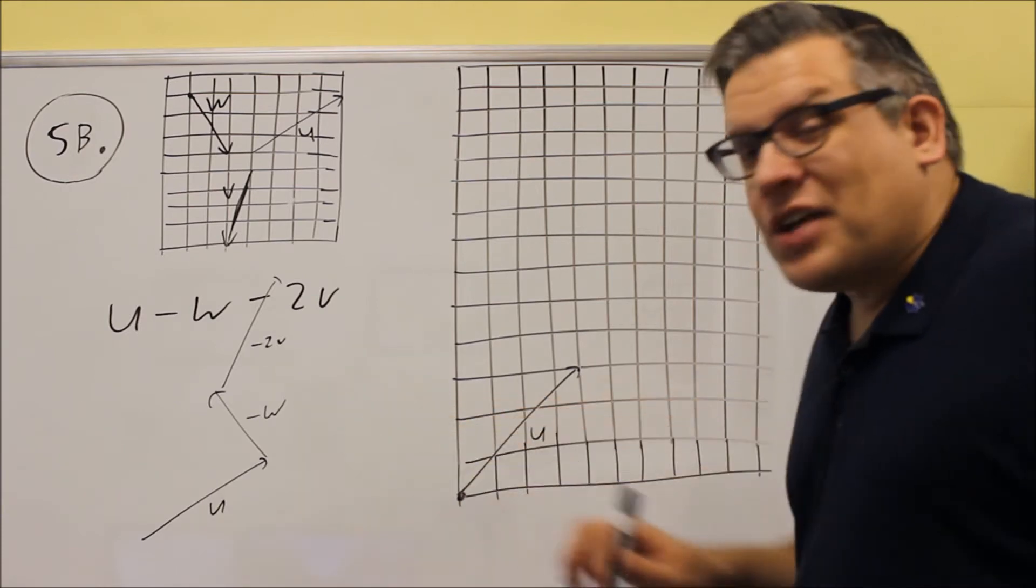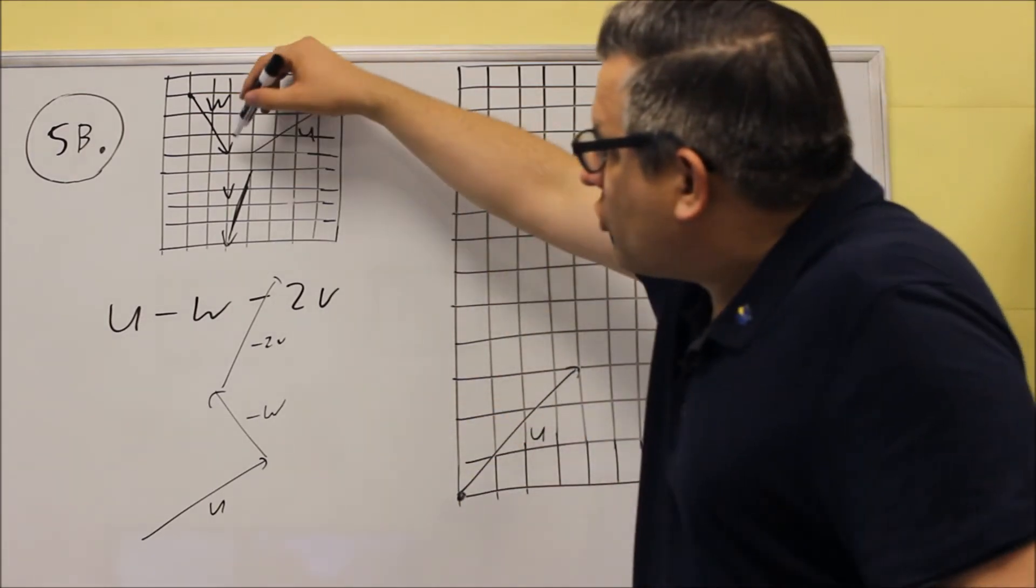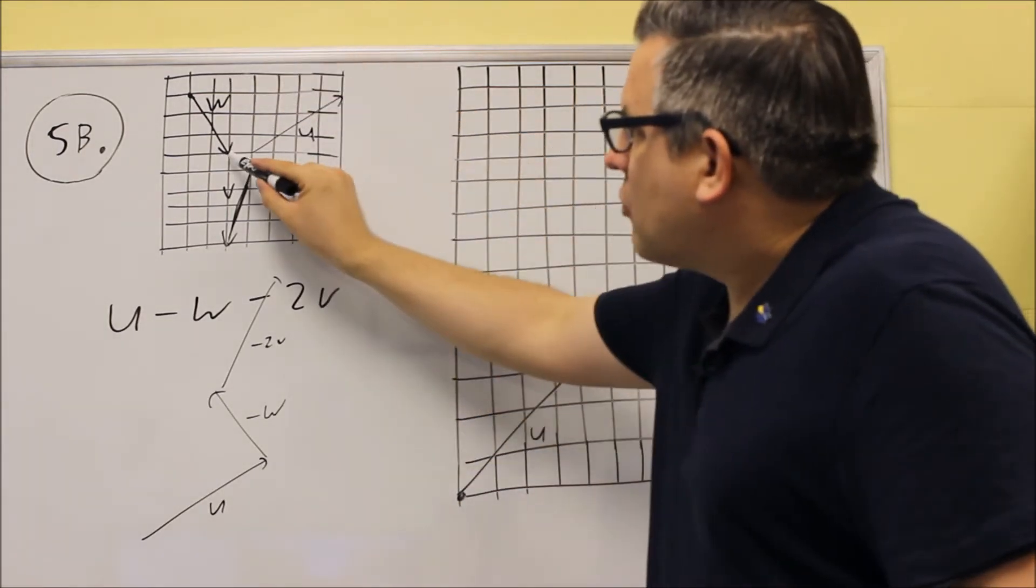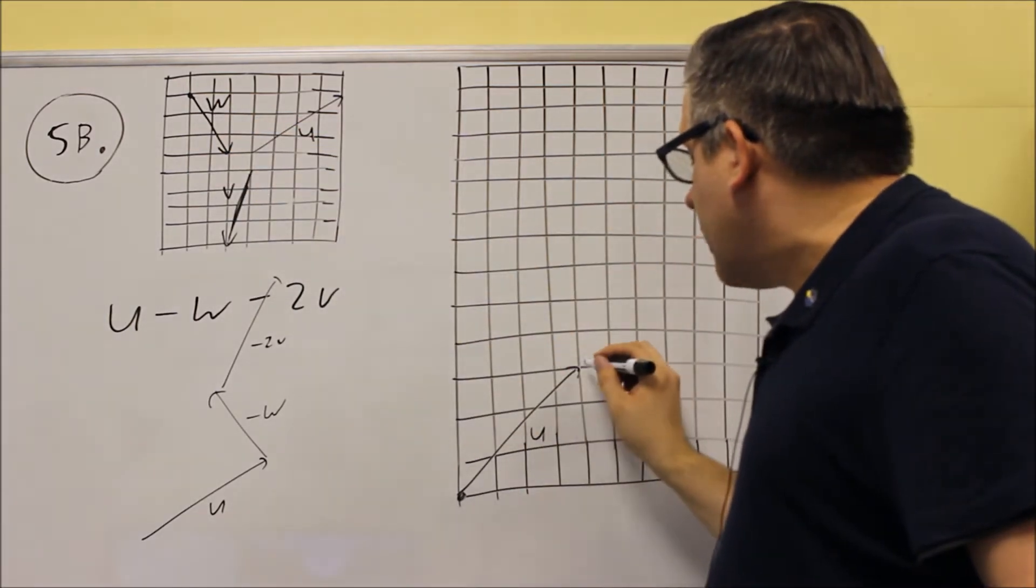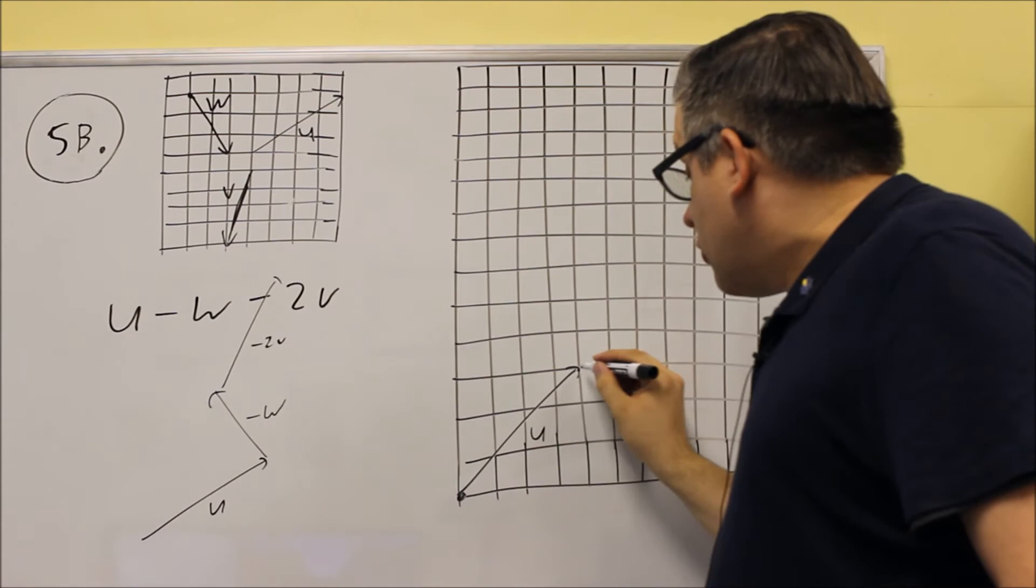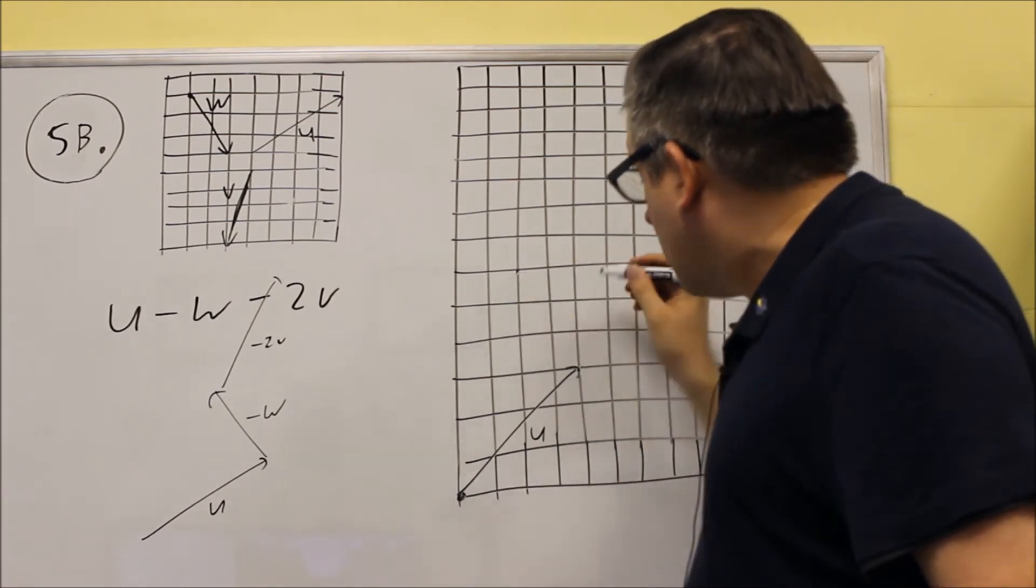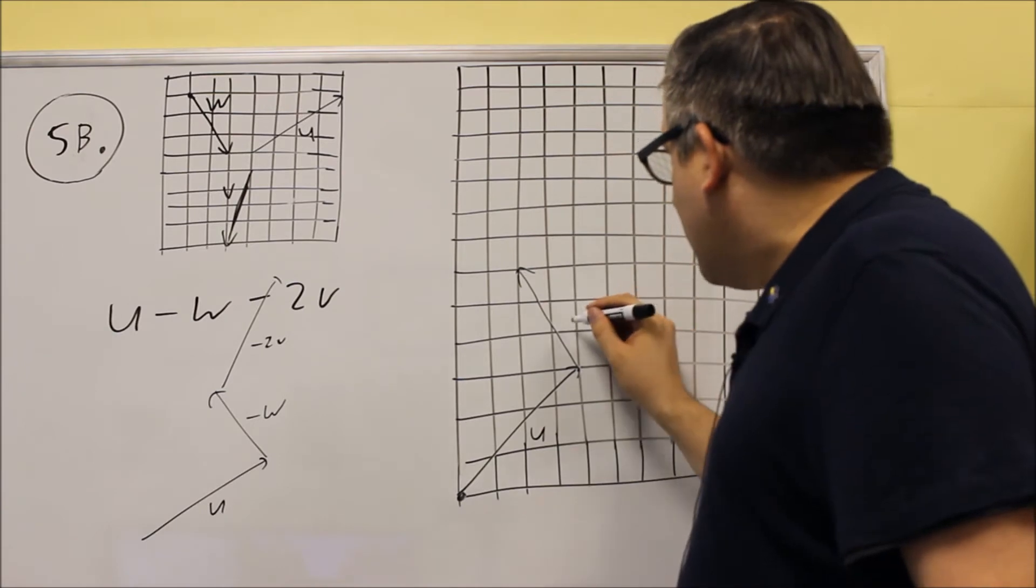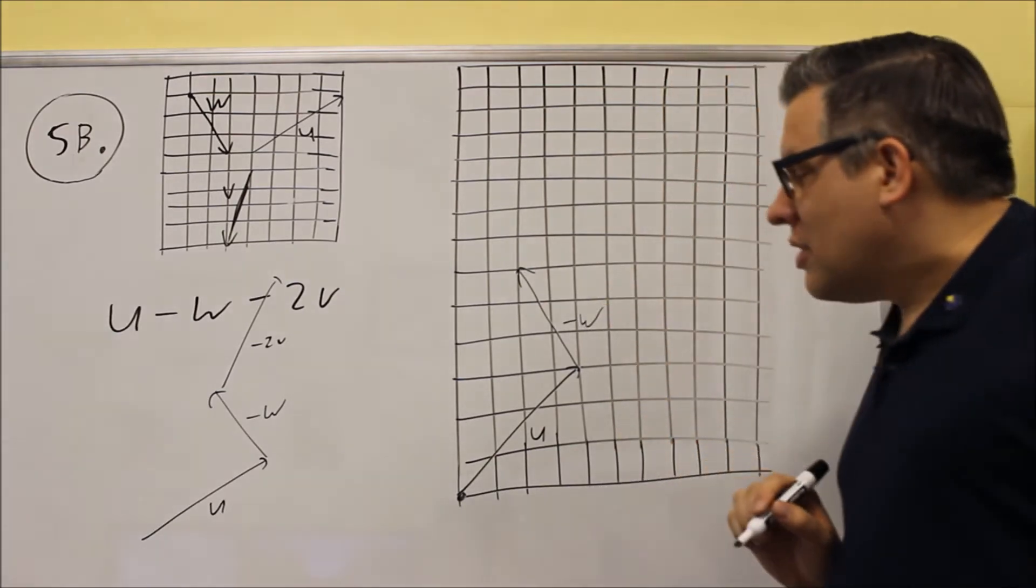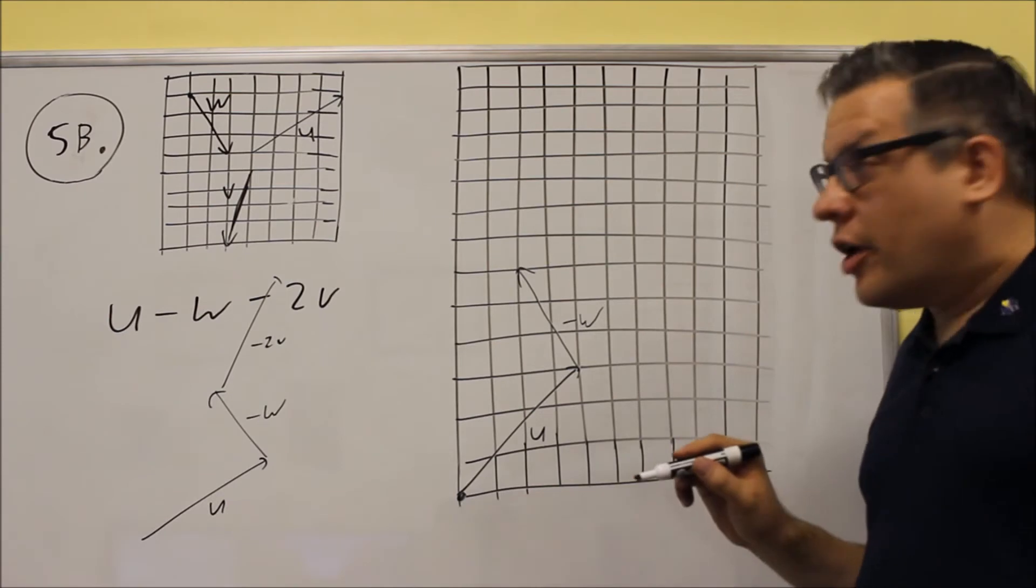Next, we want to do the negative W. We switch the arrowhead. That's going to go two places to the right and up three. So from here, two to, I mean to the left. So two to the left and up three will be here. And so that right there is negative W. It's negative because we switched the arrowhead.